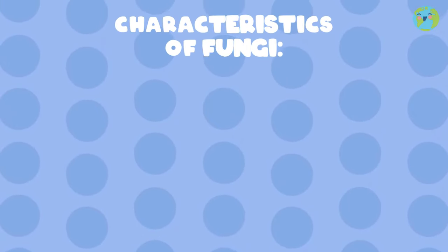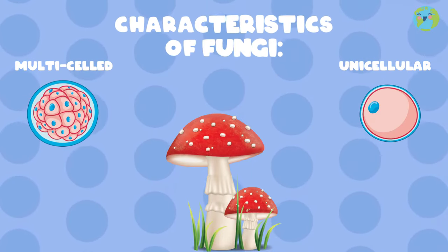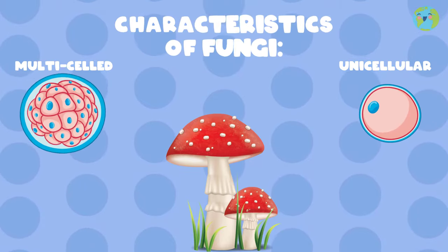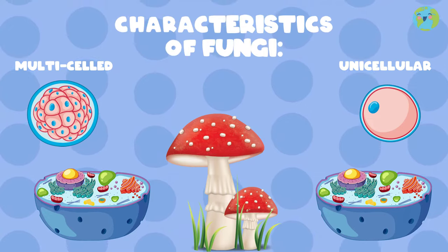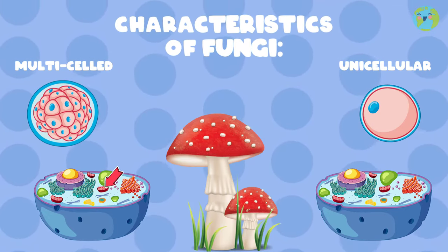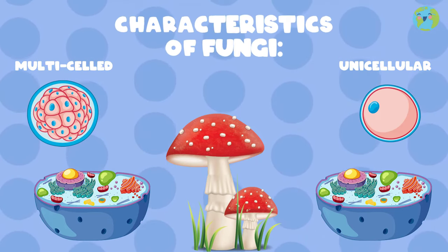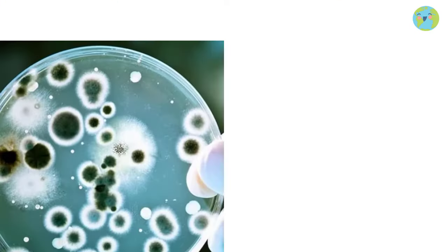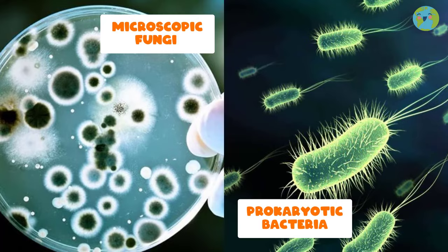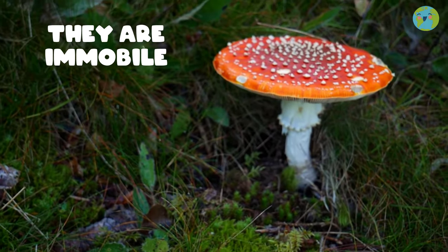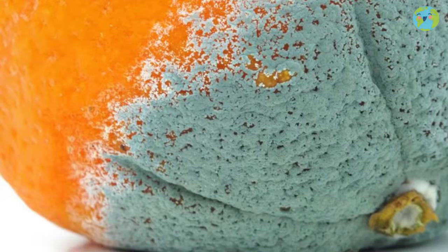A fungus is a living being of multicelled or unicellular type, which means they are formed by one or more than one cell. These cells are eukaryotic, which means that they possess a nucleus, mitochondria, endomembrane systems, and other typical features of eukaryotic cells. This makes it possible to distinguish microscopic fungi from prokaryotic bacteria. They are immobile and usually live in humid places like rotting food or on the floor in some parts of the jungle.